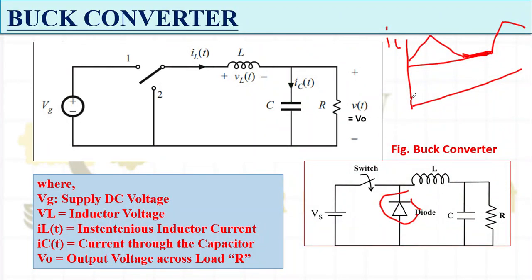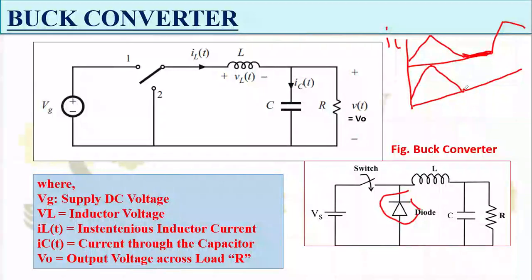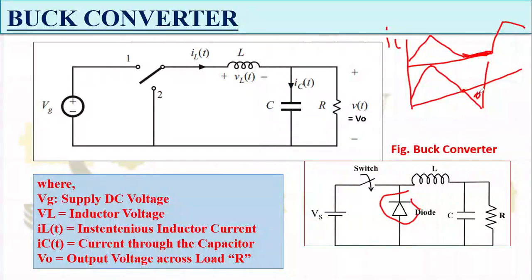In the synchronous configuration, a switch replaces the diode. The inductor current charges, then discharges and touches zero, but since the switch allows current in the negative direction, the current goes negative. Once another gate pulse is received, it charges again. This negative current is a key feature of the synchronous configuration.